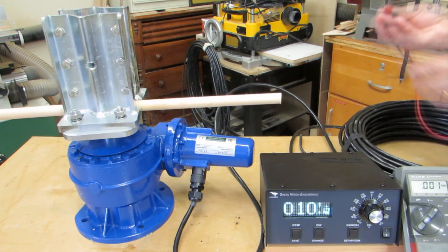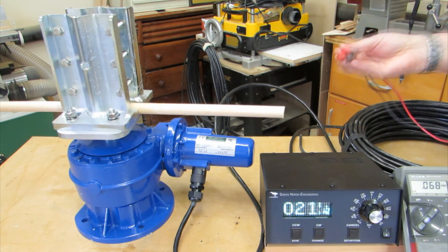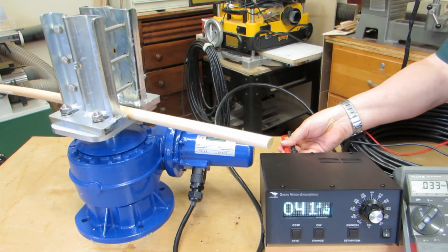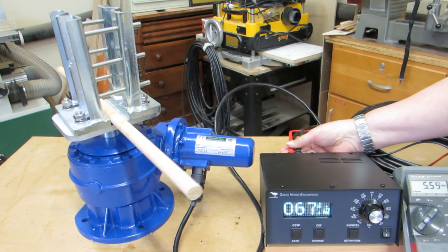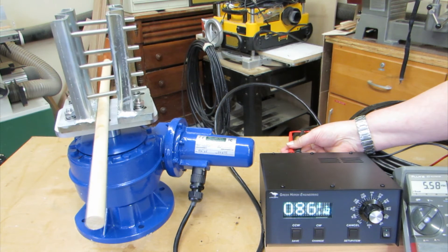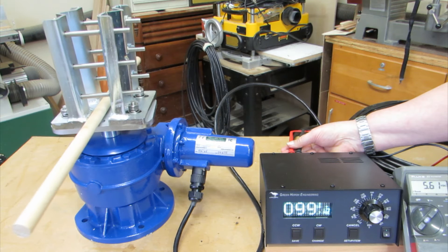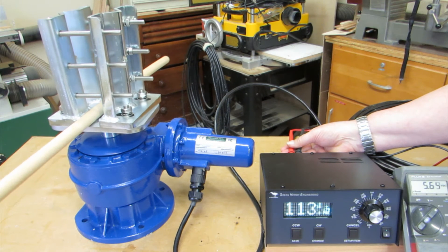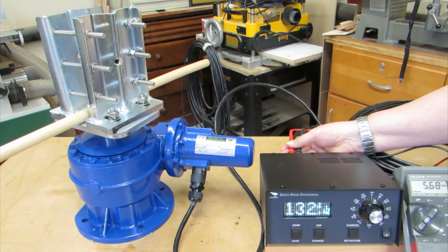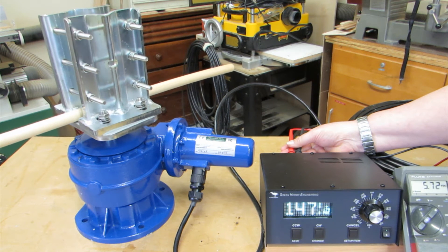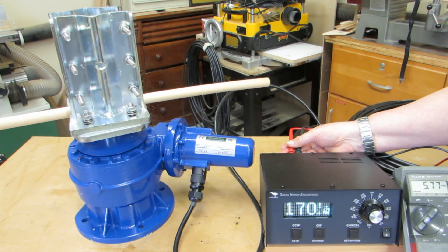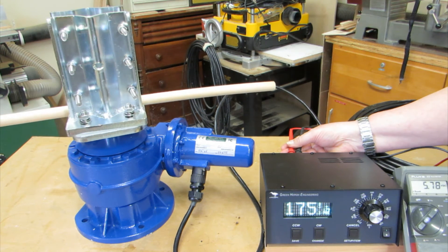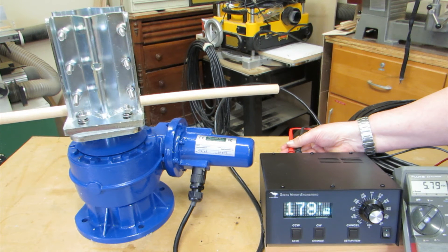If I turn the rotor to its full clockwise position, the voltage should read 5.79 volts. There we have 5.79 volts.